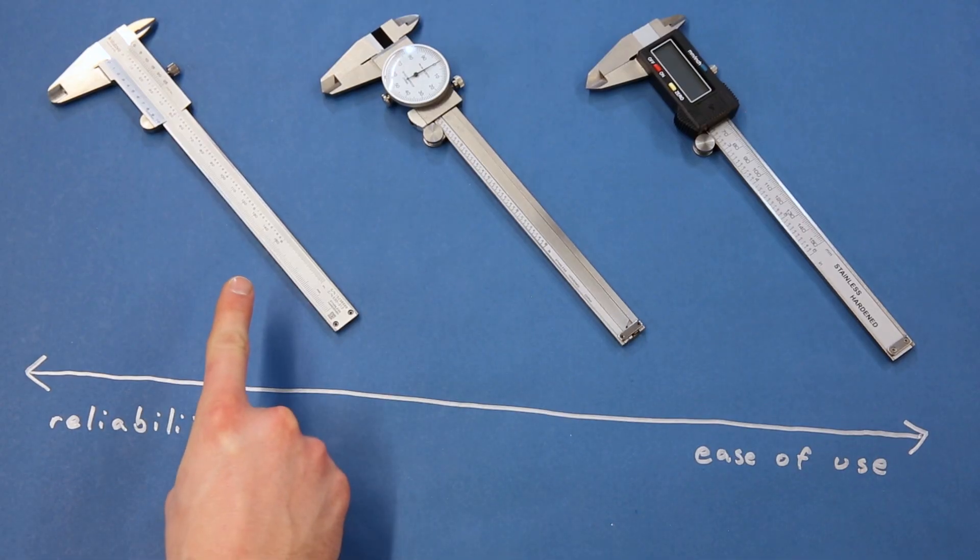Vernier calipers use two sets of rulers to get very precise readings. Because they have so few moving parts, they are often more reliable than the other two types. However, learning to read the vernier scale can be tricky and requires some math every time you want to take a reading.